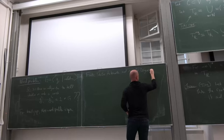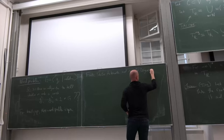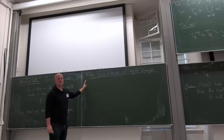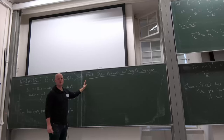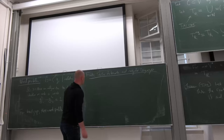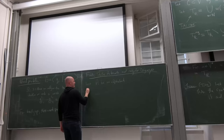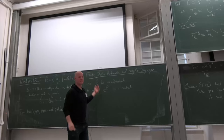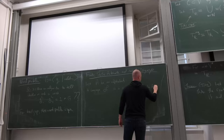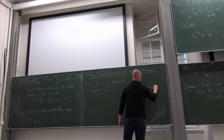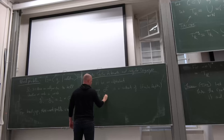Let me tell you a little bit about finite state automata and regular languages. This is an important part of the theory of Coxeter groups which is not as well known as it should be. Let A be an alphabet — just a set of letters. A language is just a subset of words you can make in this alphabet; each word has finite length.